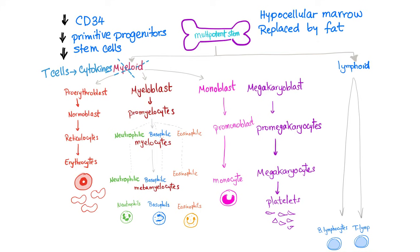Now to the mechanism of this disease — aplastic anemia. Some of these cells have CD34, a cluster of differentiation. These cells that have this cluster of differentiation are decreased — the primitive progenitors, the precursors, the stem cells are decreased. Probably because T lymphocytes will produce cytokines which will destroy the myeloid, not the lymphoid. The lymphoid are intact; the myeloid are greatly affected. That's why you can get anemia, leukopenia, and thrombocytopenia.